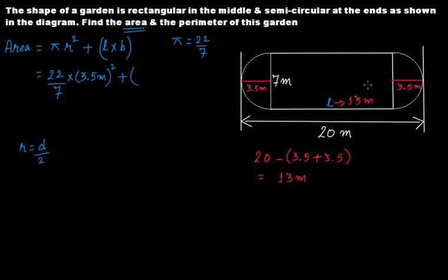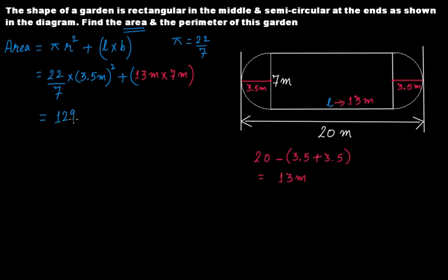Substituting the values — πr² plus length times breadth — that is (22/7)(3.5²) plus 13 times 7 — gives a total area of 129.5 square meters.